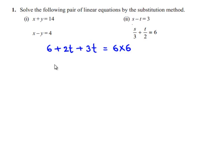This can be written as 6 plus 2t plus 3t becomes 5t, which equals 6 times 6, which is 36.